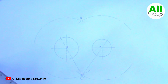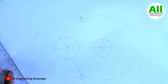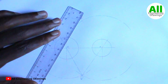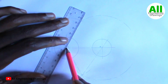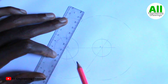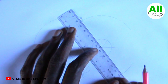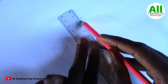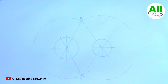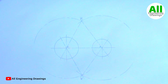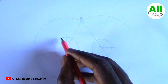I will do the same for the top point as well. I will label those points T — that is the point of tangency.